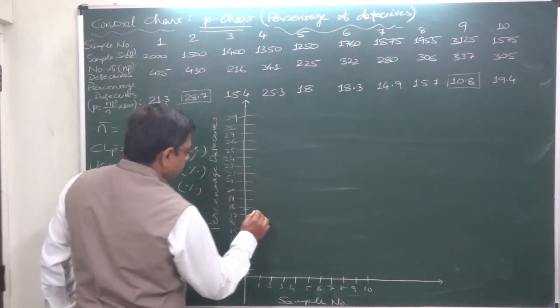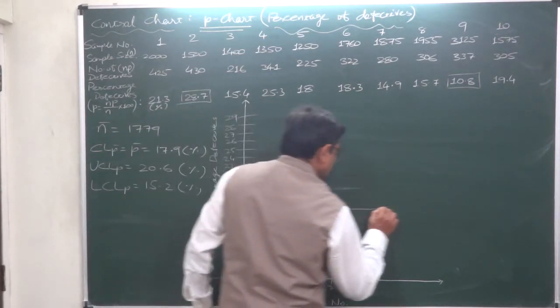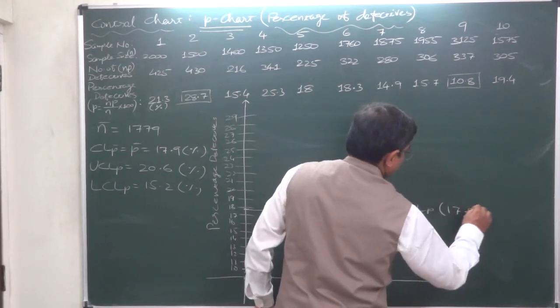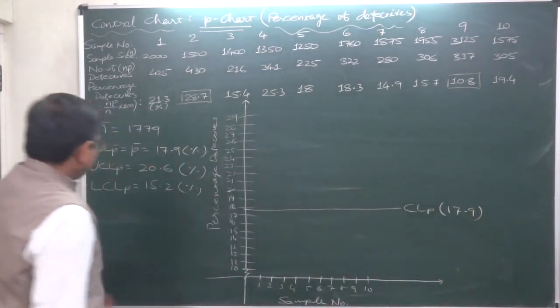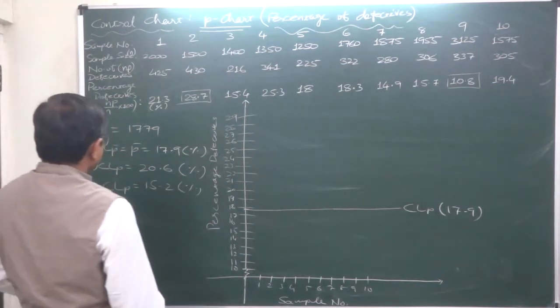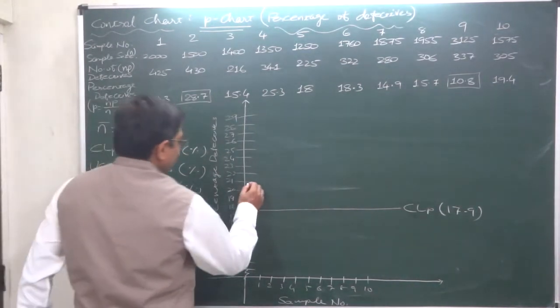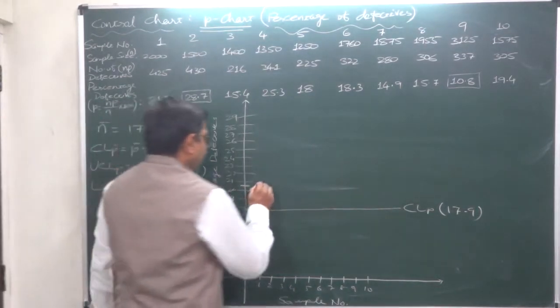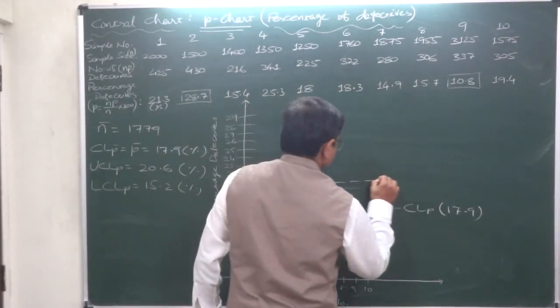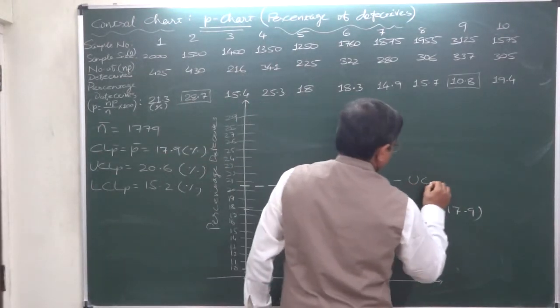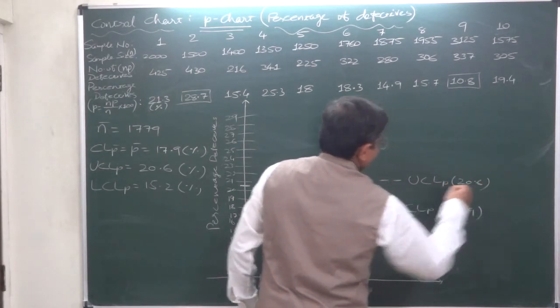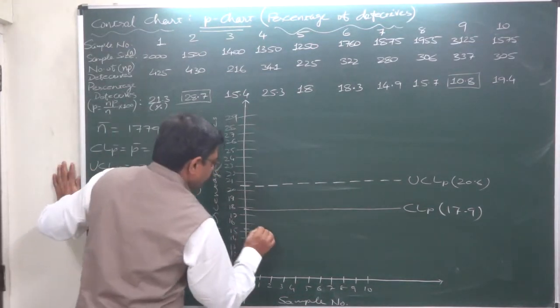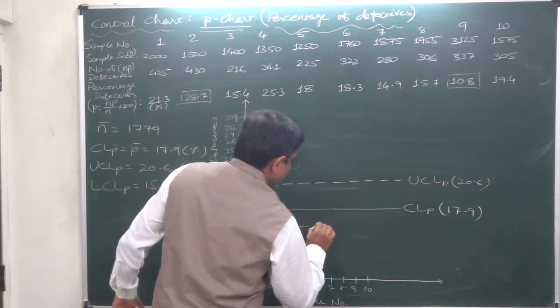Upper control limit is 20.6, four millimeters below 21. And lower control limit is 15.2, two millimeters above 15. Upper control limit and lower control limit are both drawn as dotted or broken lines.